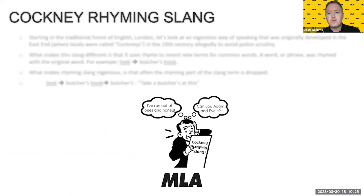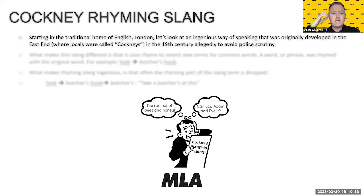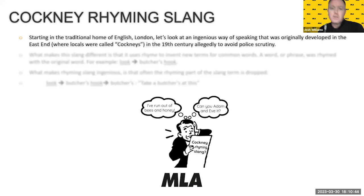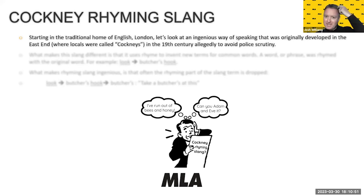The first thing I thought would be really interesting to talk about is Cockney rhyming slang. As you may know, Cockneys are generally people traditionally from the centre of London or even the east end of London. To be honest, they're sort of a dying breed now — if you live in the centre of London, you might be an oligarch or someone very rich. But it's an ingenious way of speaking that was originally developed in the 19th century, allegedly to avoid police scrutiny.